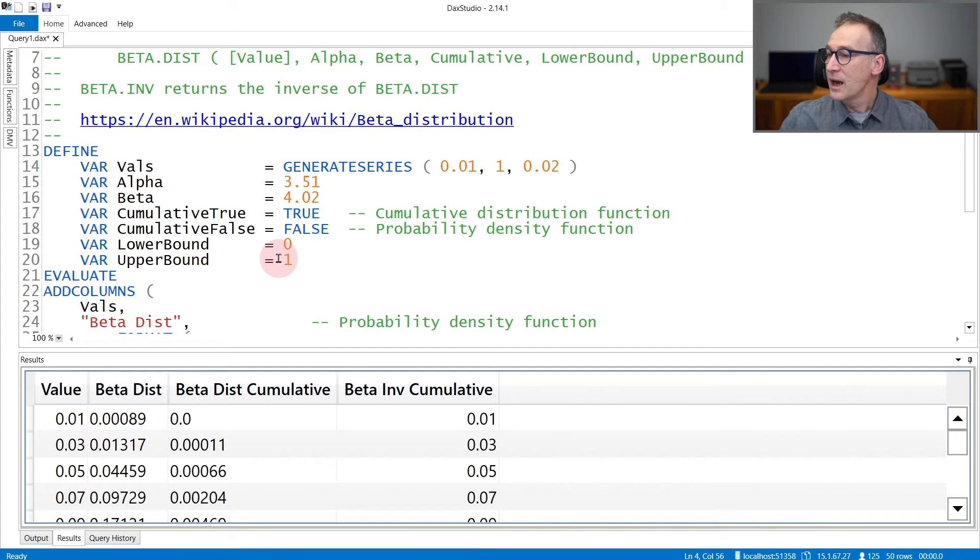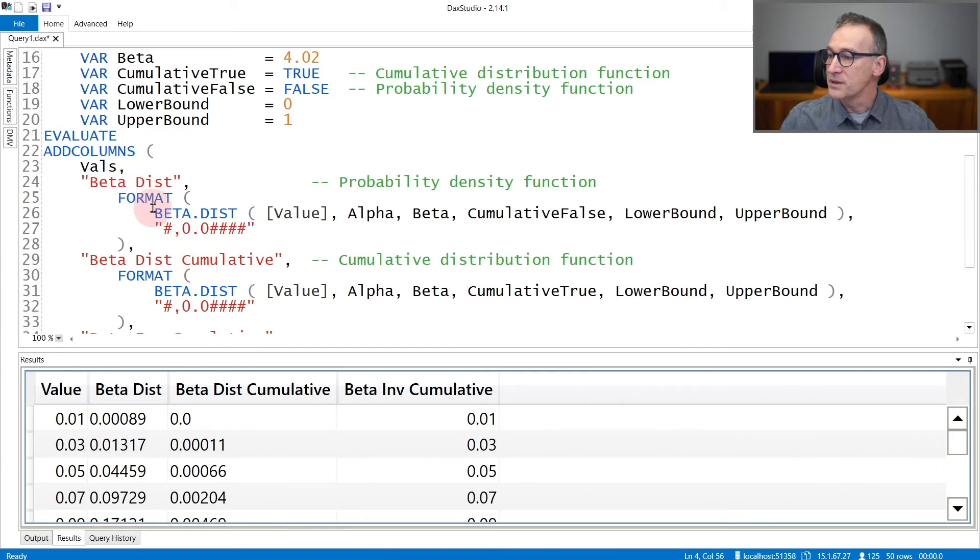In the example, I just created a variable with a set of values. I fixed the values for alpha and beta, and then I used as a lower bound zero and one as the upper bound. I call the beta distribution function, obtaining the value for the given value and the cumulative value that you can see here.